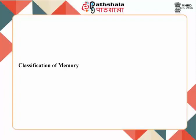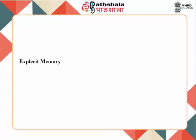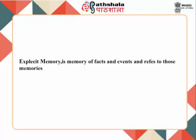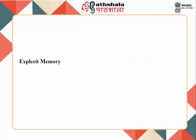Memory can be broadly classified into explicit memory and implicit memory. Explicit memory is memory of facts and events and refers to those memories that can be consciously recalled. Explicit memory can be further subdivided into semantic memory and episodic memory.